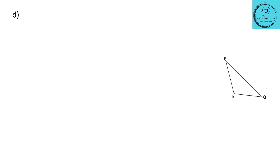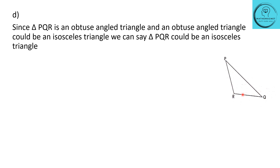Question D. They have given us triangle PQR. We can see that angle R is an obtuse angle. The question was to identify if this triangle is equilateral or isosceles. Since equilateral triangles always have all angles equal to 60 degrees, and this triangle already has an obtuse angle, it cannot be equilateral. Since triangle PQR is an obtuse-angled triangle, and an obtuse-angled triangle could be isosceles, we can say triangle PQR could be an isosceles triangle.